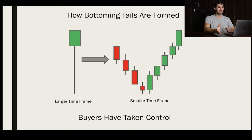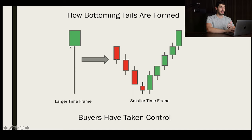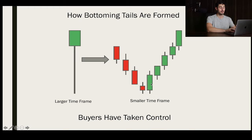Let's talk about how bottoming tails are formed. Since it's a green bar, it opened at the bottom of the body. But we also have a large wick. What happened is it opened here, and if we go to the smaller time frame, we can see it dropped — dropped all the way down here and formed the lows at this wick. From there, who took control? The buyers took control.